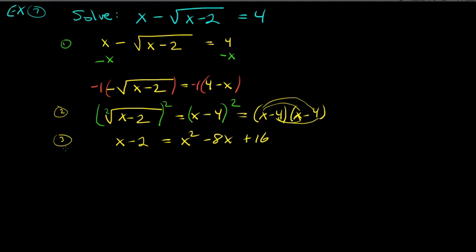Step three: solve the equation. We now have a quadratic, so get zero on one side. Switch sides so x squared minus 8x plus 16 is on the left and x minus 2 is on the right. Subtract x and add 2 to both sides to get x squared minus 9x plus 18 equals zero.